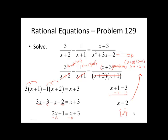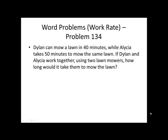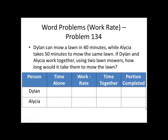Alright, on to the last problem. This is an example of what we call a work rate problem. Dylan can mow a lawn in 40 minutes while Alicia takes 50 minutes to mow the same lawn. If Dylan and Alicia worked together using two lawn mowers, how long would it take them to mow the lawn? We're given information about two separate people doing the same job. Now we want to see how long it takes them together. The following table is pretty helpful to use. We'll begin by filling in the time alone, which for Dylan was 40 minutes and for Alicia was 50.